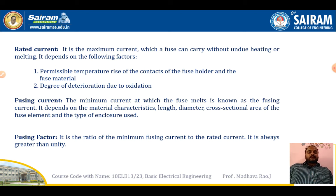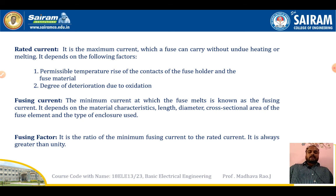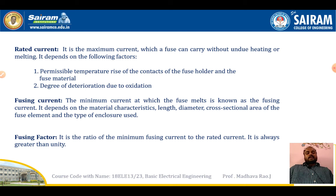Fusing current depends on material characteristics, length, diameter, cross-sectional area of the fuse element, and the type of enclosure used. Fusing factor is the ratio of minimum fusing current to rated current. It is always greater than unity — this is very important and may be asked in examinations. If asked whether fusing factor is greater than one, less than one, or equal to one — the answer is always greater than one.